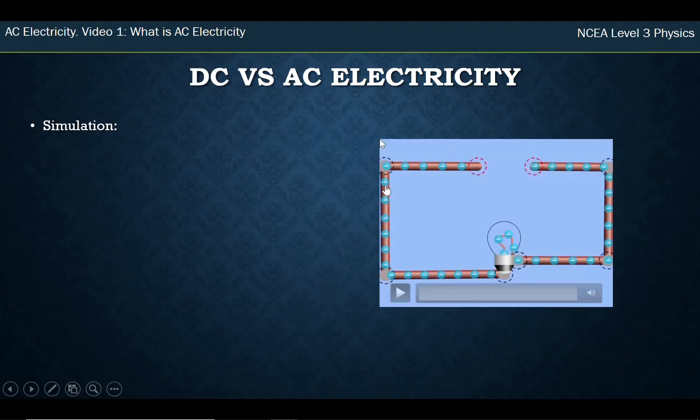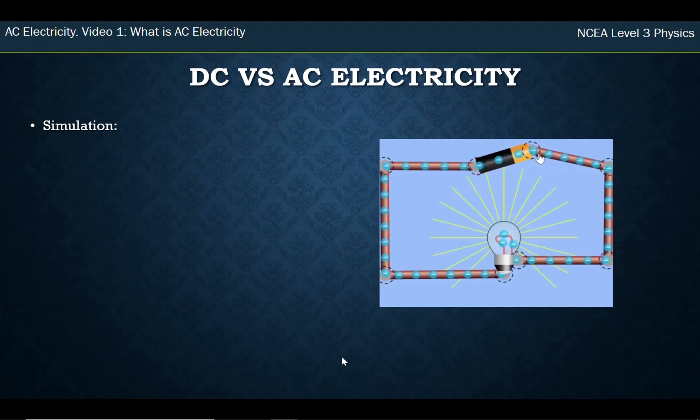So here's a simulation on the PhET program that I like to use and what I'm going to do is I'm going to put a battery in here which is a DC battery just giving a direct current and you'll see the electrons flow around in one direction and the bulb lights up.